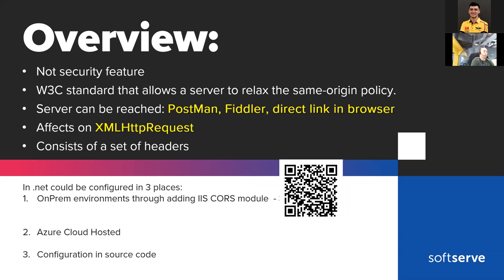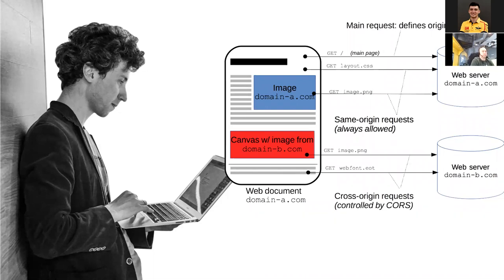Here's a link to configuration on IIS environments — it's a pretty detailed explanation — and also about Azure cloud-hosted configuration. For source code configuration, we will talk in more detail. We will also cover IIS configuration because it's still available and developers still use it. From the perspective of client and server, we can see the resource we want to request from our web server, and the resource we plan to request from a secondary web server which probably doesn't know about us. If we configure CORS normally, we get a positive result.